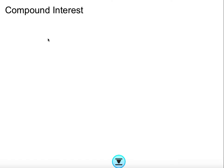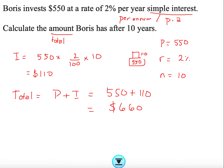What's different from compound interest compared to simple interest — if you've watched the previous video — is that for compound interest we don't have a specific formula for the interest itself. You can only calculate the interest at the end once you have the future value. For simple interest, there was a specific interest formula, but remember the final value for simple interest is when you add the interest to your principal.